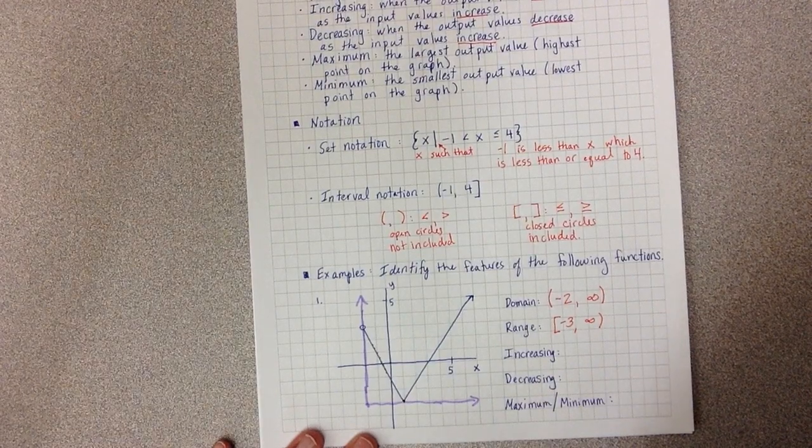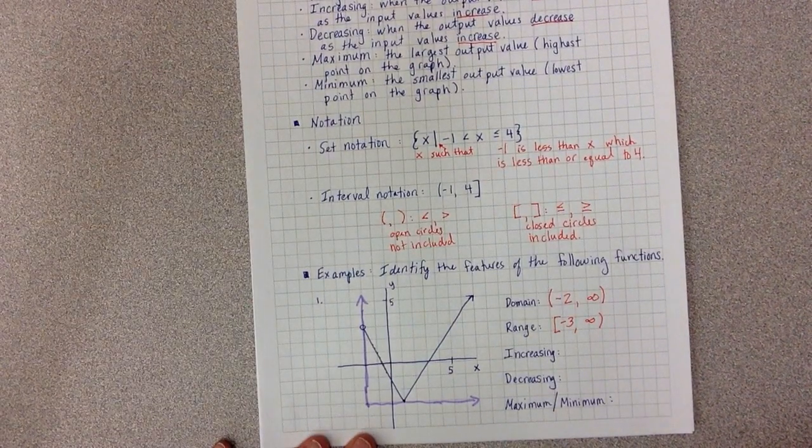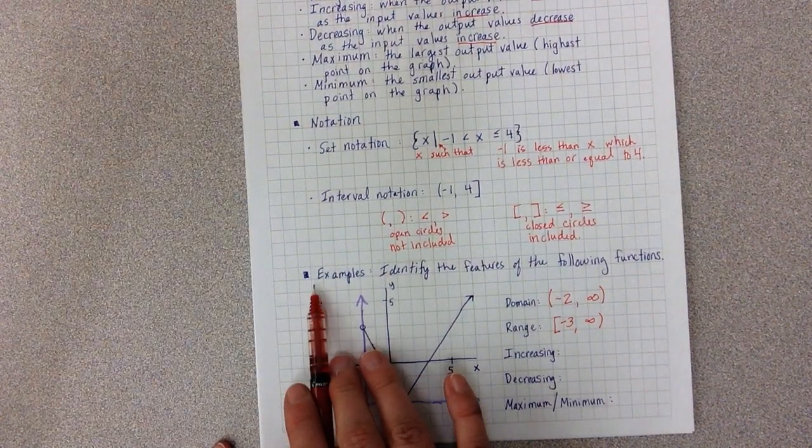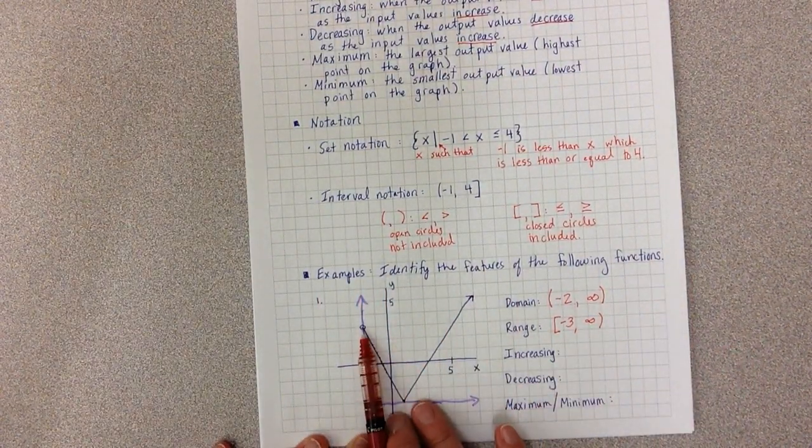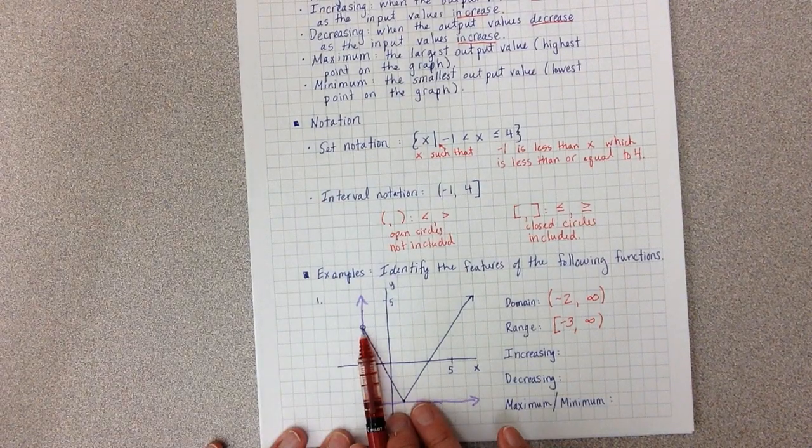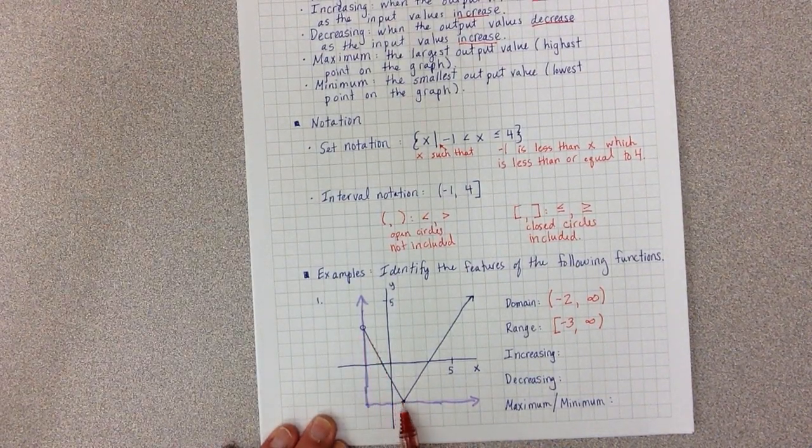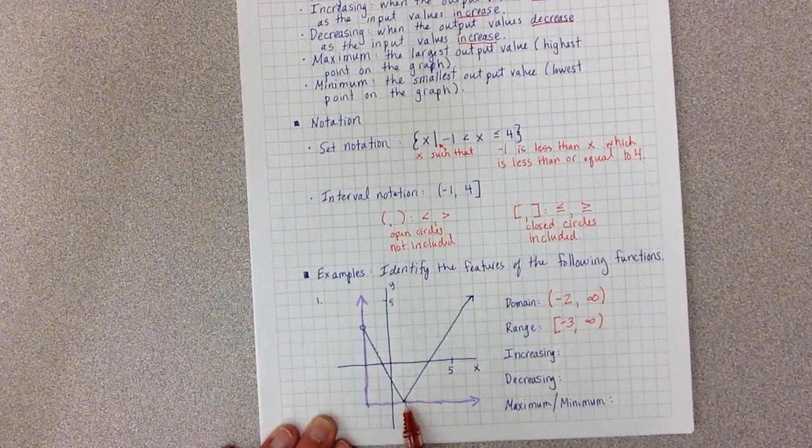For the increasing and decreasing, I always want to walk my graph from left to right. That's the way we read in English. We start on the left side of the page. We read to the right. So if I start at my graph on the left-hand side, and I start walking my graph, the question is, did I go down or up? And we went down.